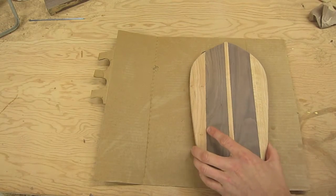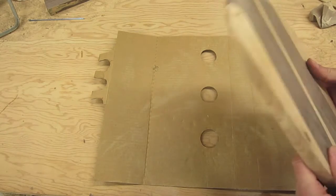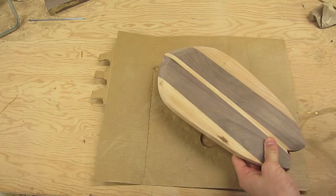So now in order to get rid of the marks that were left by the belt sander, we're going to use a random orbital sander with a 120 grit pad.